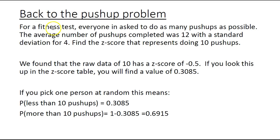Back to the push-up problem, we had a z-score of negative 0.5. When you find it in the z-score table, you'll get 0.3085. That means the probability of someone doing less than 10 push-ups is 0.3085, about 30 or 31 percent.